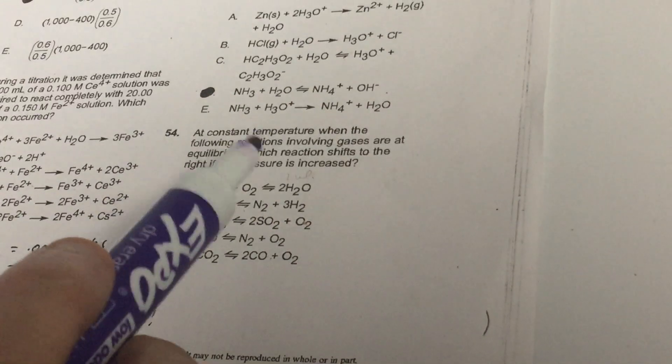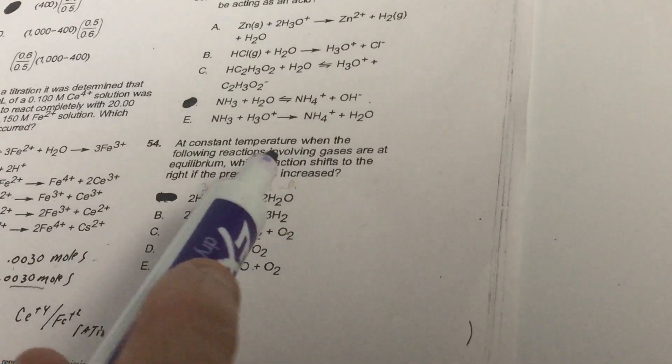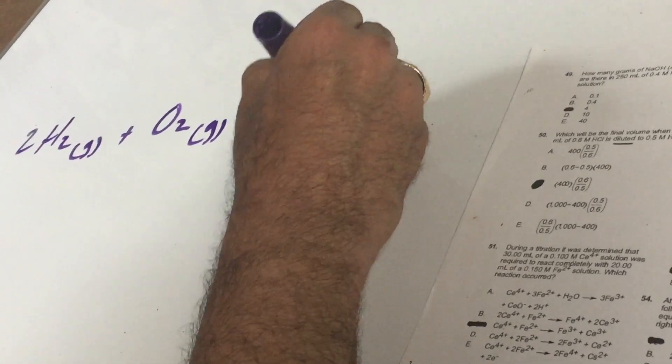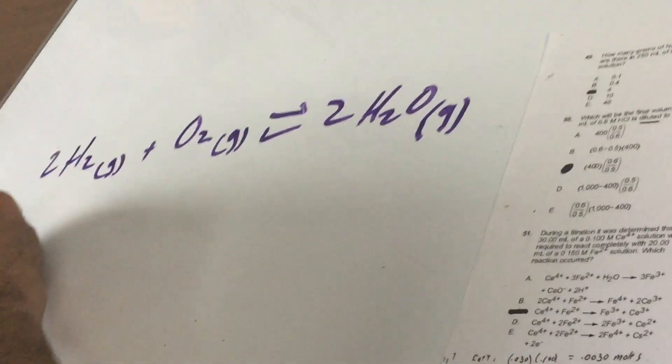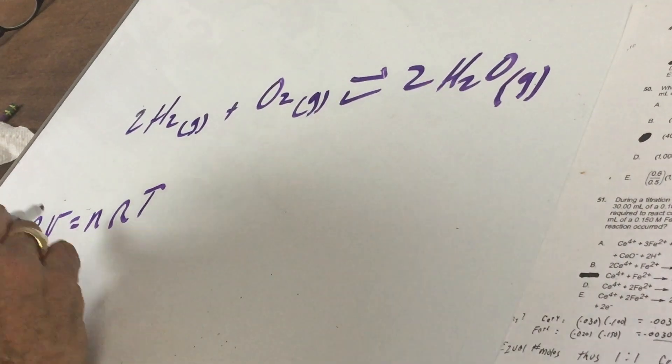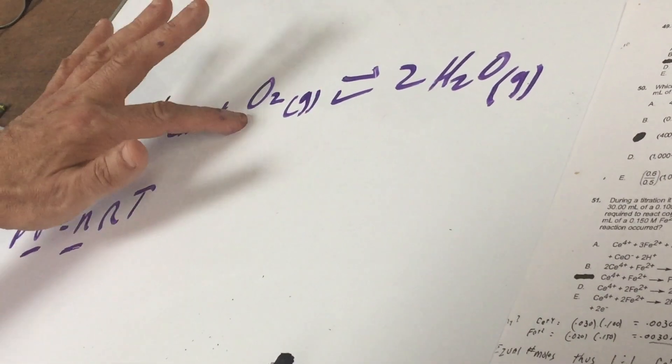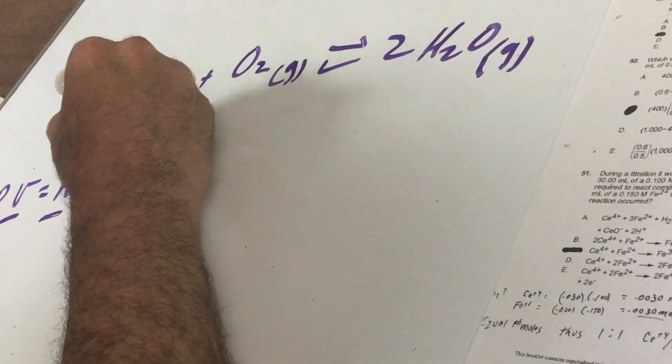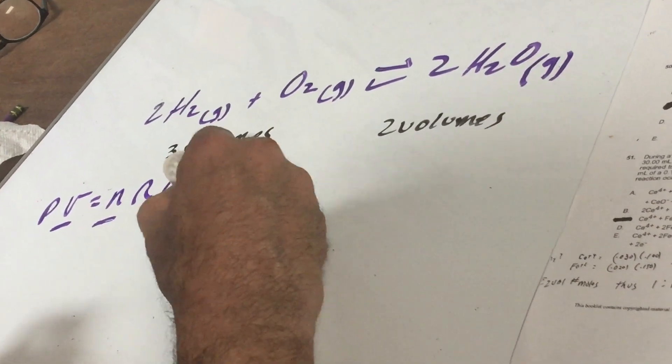At constant temperature, when the following reactions involving gases are at equilibrium, which reaction shifts to the right if the pressure is increased? We have 2H2 gas plus O2 gas gives 2H2O, and they're telling me everything's a gas. What I would do is to count up the volumes. We remembered PV equals NRT. I'm hoping you can see that volume is proportional to moles. So if I say on this side of the equation, you have 2 moles and 1 mole is 3 moles, instead of saying 3 moles, I'm going to say 3 volumes of gas. And here, there is 2 volumes.